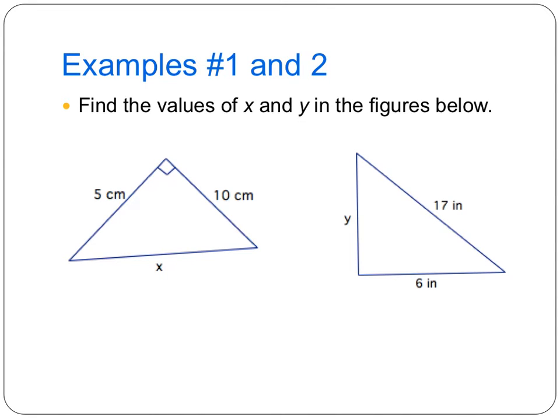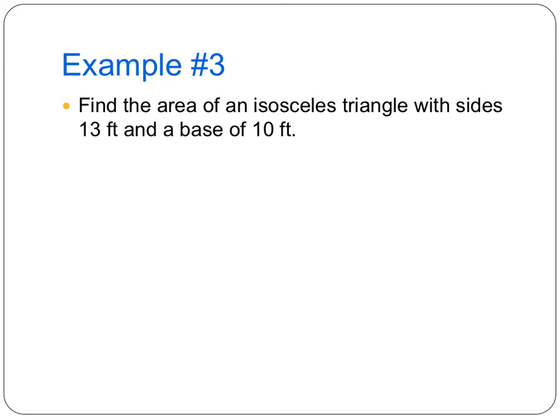I have one more Pythagorean theorem example for us and then we're going to move on to classifying triangles. So this example says, find the area of an isosceles triangle with sides of 13 feet and a base of 10 feet. So first let's draw ourselves a figure. Okay, isosceles triangle. Go back to your memory. Hopefully you remember that means that the triangle has two congruent sides. Those are the sides that are 13 feet and 13 feet. And then it says a base of 10. The base is the side that is not congruent.